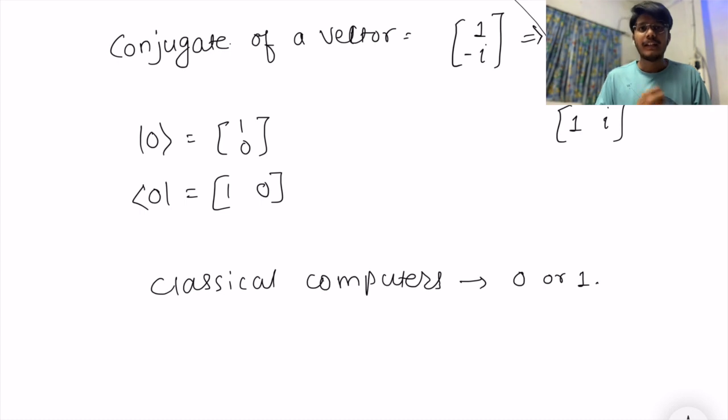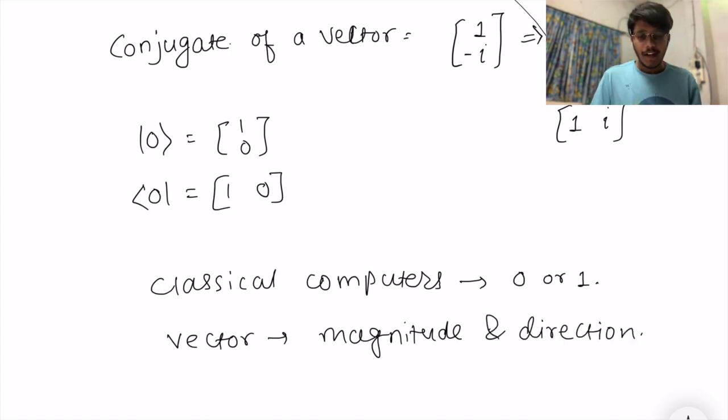But to represent a qubit we need magnitude as well as direction, and there comes a vector. In linear algebra, a vector can have both magnitude and direction.